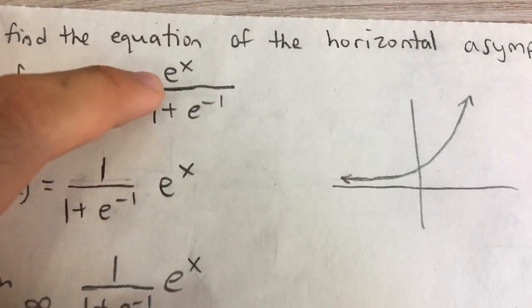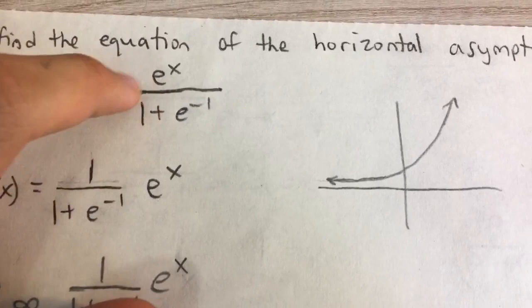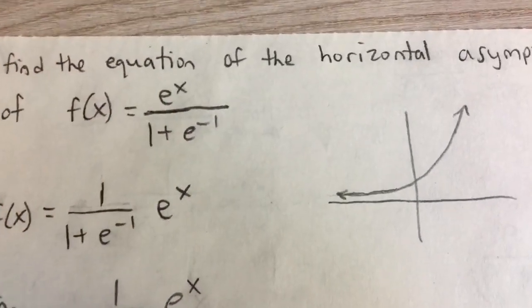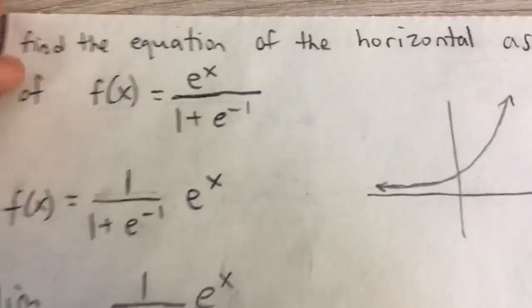So if you take a look at this function, it's actually just e to the x and it's divided by 1 plus e to the negative 1. 1 plus e to the negative 1 is just a number. It has no variables in it.